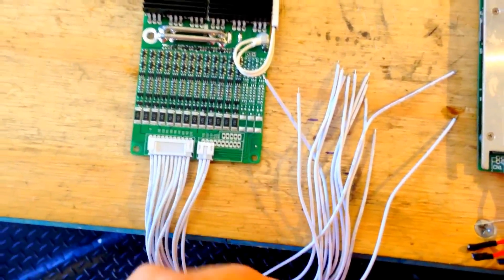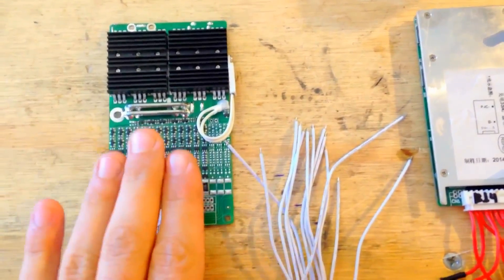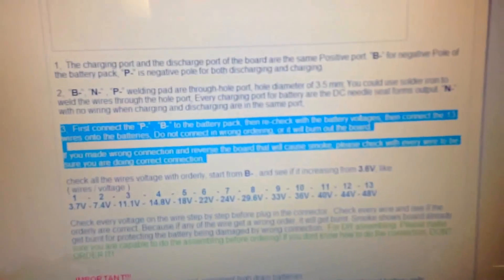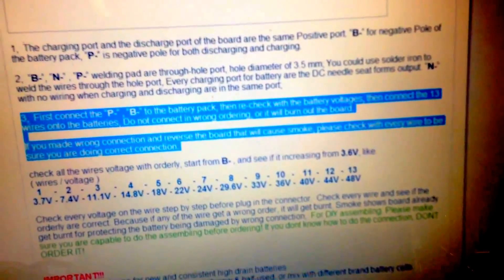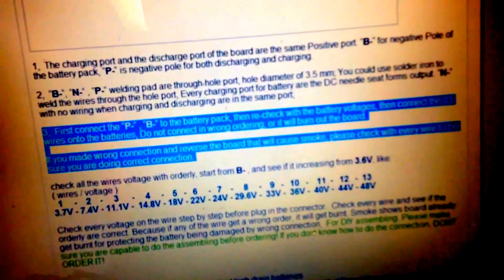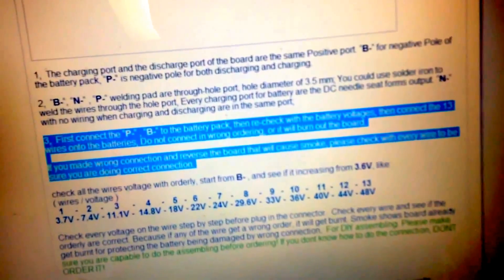You plug it in - that's the proper way. Some BMS actually blow if you do it the wrong way. So have a look at what this manufacturer says: first connect the B minus to the battery pack, then check the battery voltage, then connect the 13S wires. Do not connect it in the wrong order, otherwise you burn the board. See here, very clear.